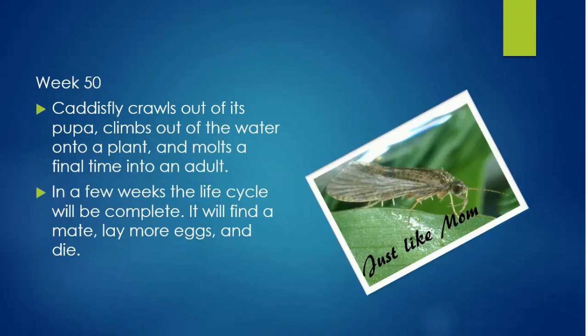The caddisfly emerges from its pupa and climbs out of the water and onto a plant to molt one last time into its adult form. In the next few weeks, the adult will find a mate, lay more eggs, then die.